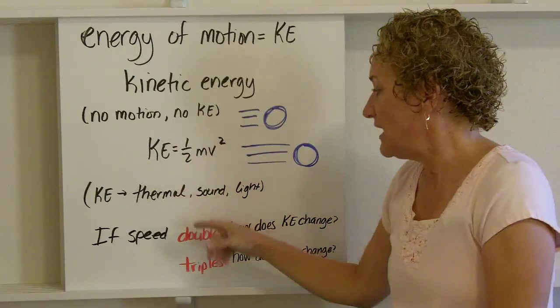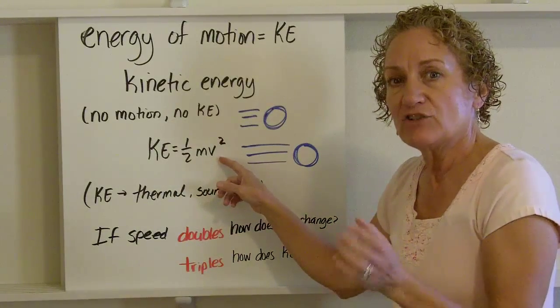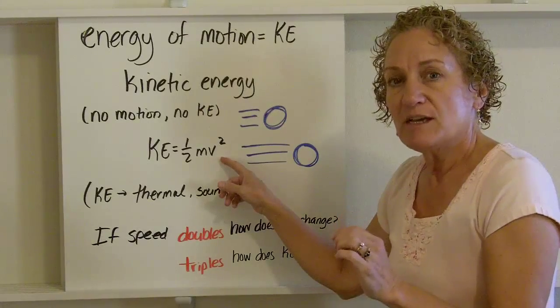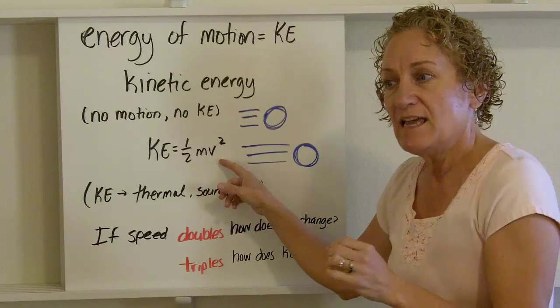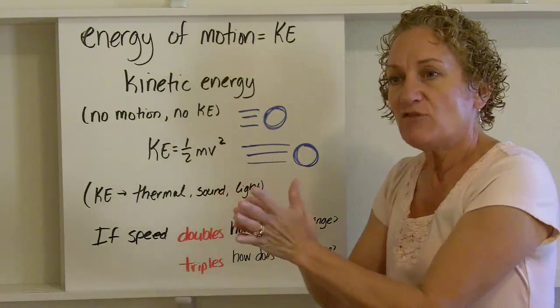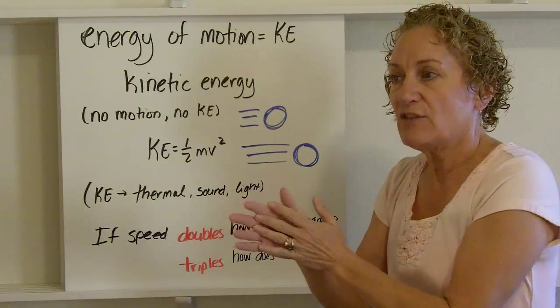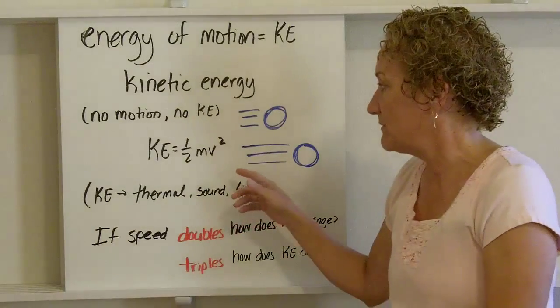So using this equation, if speed doubles, I'm going to use the word speed and velocity interchangeably in this video. While velocity is a vector quantity and speed is not, generally things only travel in one direction. They may travel northwest or southeast, but they're usually traveling forward and not backwards.